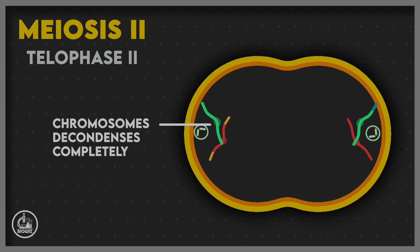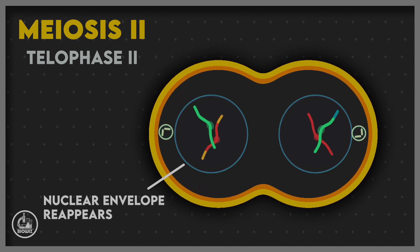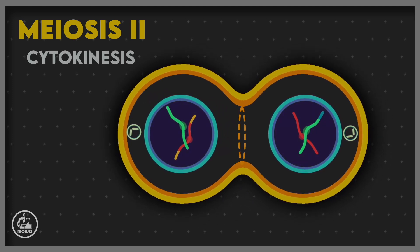In telophase II, chromosomes completely decondense, and nucleolus and nuclear envelope reappear. Telophase II is followed by another cytokinesis, resulting in formation of four haploid cells.